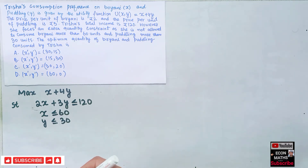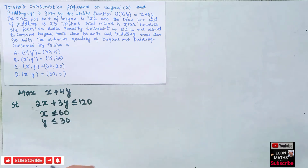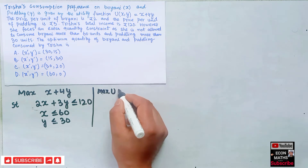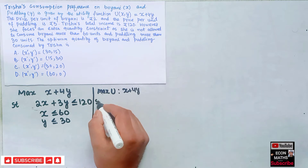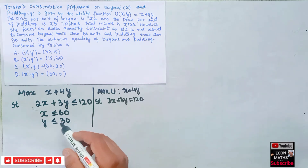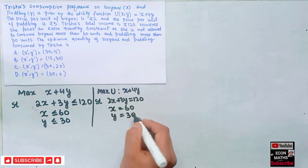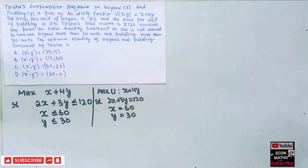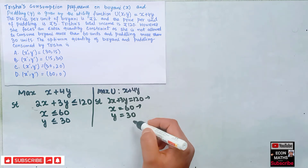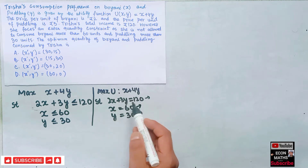To find the optimal solution, we first convert the inequalities into equalities. We maximize utility x + 4y, subject to: 2x + 3y = 120, x = 60, and y = 30. This is the first step in solving the linear programming problem by the graphical method. We then take each constraint and graph it out correspondingly, finding the values of x and y for each.